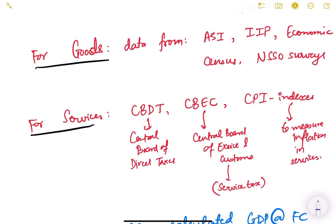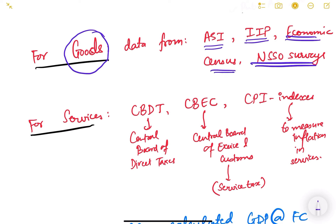Now, where do we get the data from? For goods, we get the data from ASI — Annual Survey of Industries — then the Index of Industrial Production, economic census, and NSSO surveys. NSSO surveys are the National Sample Survey Organization surveys. They do surveys usually for the informal economy, like household surveys, and they try to estimate how much the economy is growing in the informal sector. There are different rounds of surveys, and that is known as the NSSO survey.